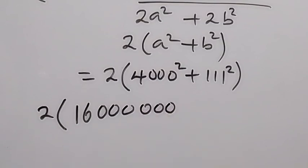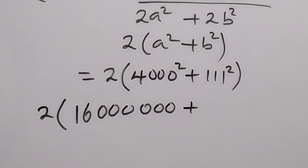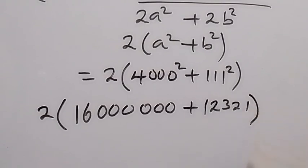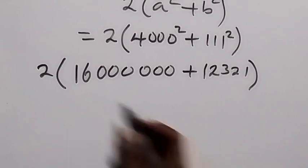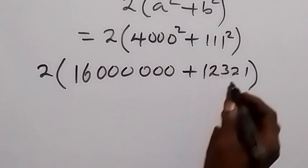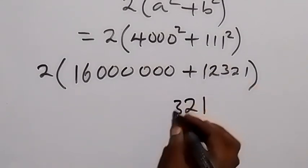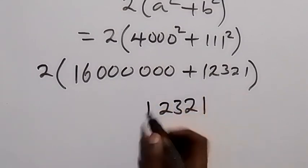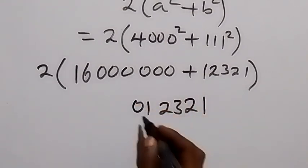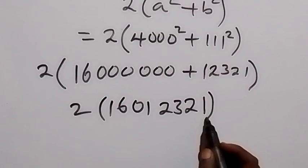Then also 111 squared — that means 111 times 111 — when we multiply that, it gives us 12321. We can then add 16,000,000 and 12321 together first before we multiply. When we add, we get 1, 2, 3, 2, 1 in the last five digits, leaving us with 16,012,321.